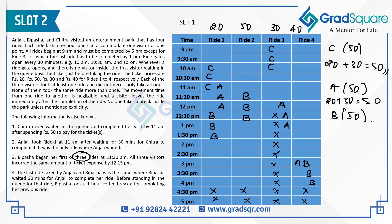After Anjali completes Ride 3 at 1 pm, she takes Ride 2 at 1 pm and finishes at 2 pm, then goes straight to Ride 4. Bibasha was already waiting there, having waited 30 minutes for Anjali to complete her previous ride. Bibasha then takes Ride 4 starting at 2 pm and completes it by 4 pm — forming the complete solution.